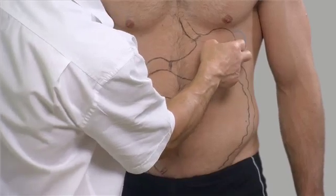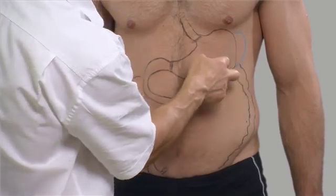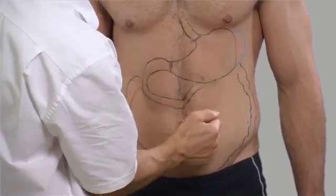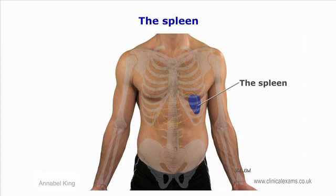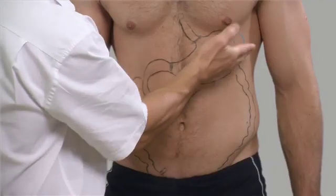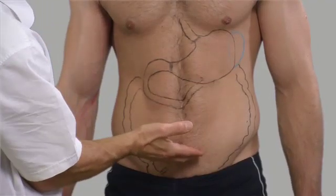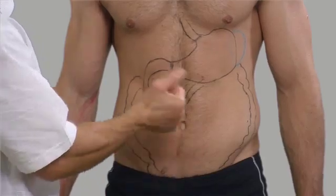The spleen lies on the left side, posterior to the costal cartilages of ribs 9, 10, 11, and 12. Its length is about ten centimeters, depth seven centimeters, and it is about three to four centimeters thick. The spleen can become grossly enlarged up to three times its size, in which case it may be palpable as it projects towards the umbilicus.